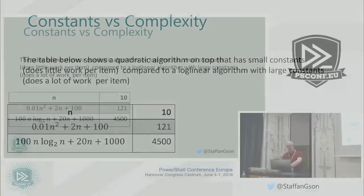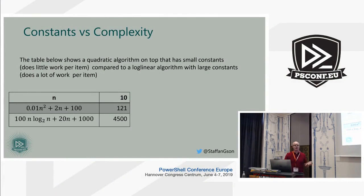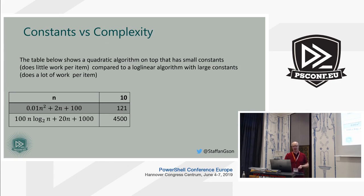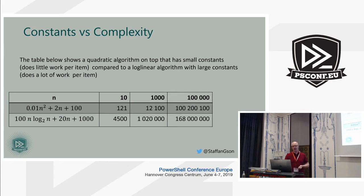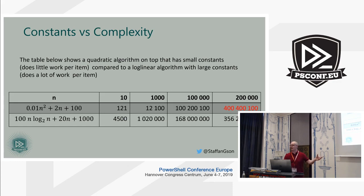To show you a table: at the top you have a quadratic algorithm with a super-efficient implementation that's 10,000 times faster constant-wise than the logarithmic one at the bottom. With small inputs of 10, the quadratic algorithm is much faster. With a thousand, it's still a lot faster. At 100,000, the difference isn't that big. But with 200,000, even though the constant factors were 10,000-to-1 in its favor, given enough input size you lose every time — you can't argue with a quadratic algorithm.